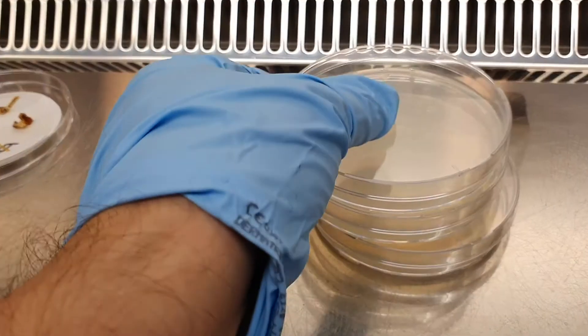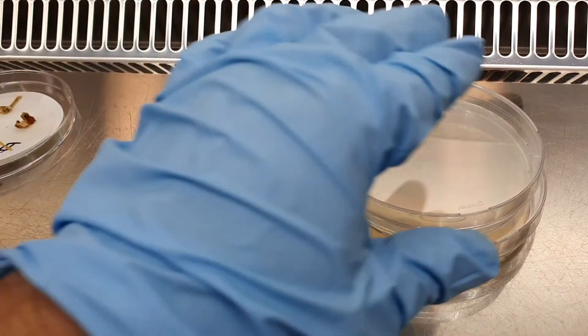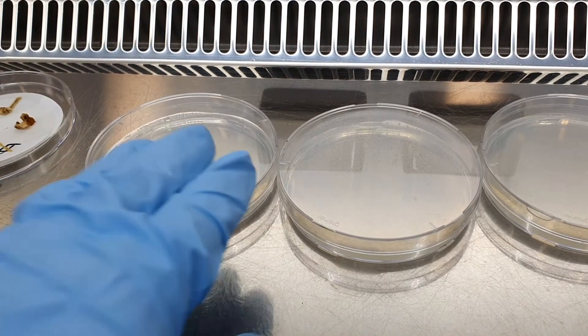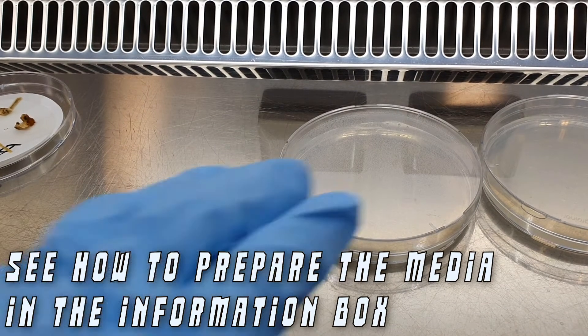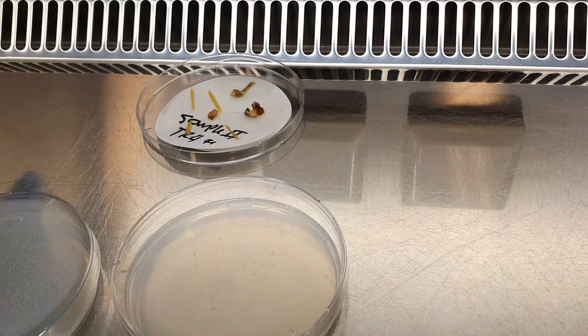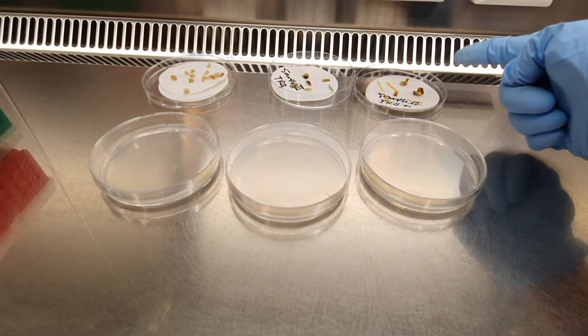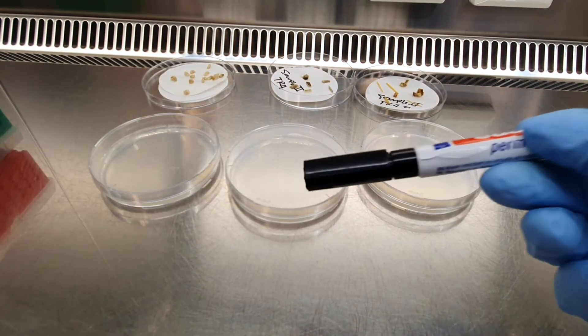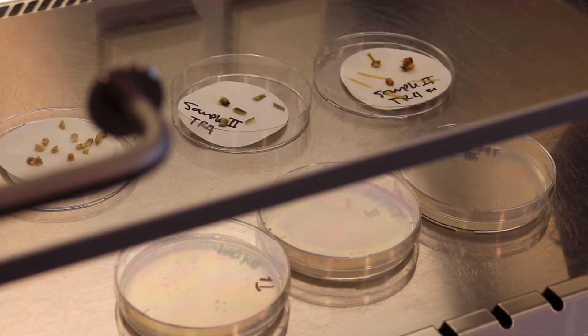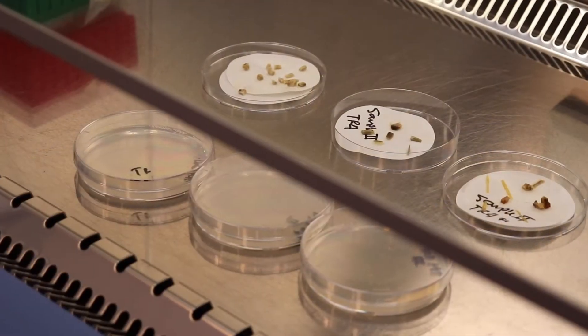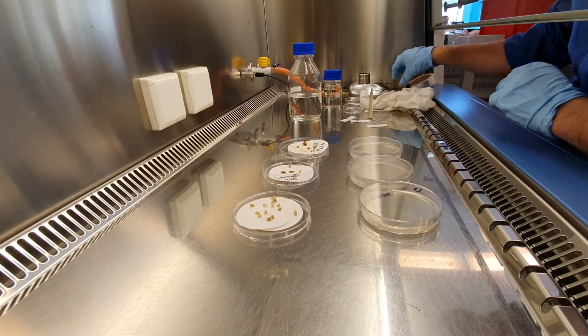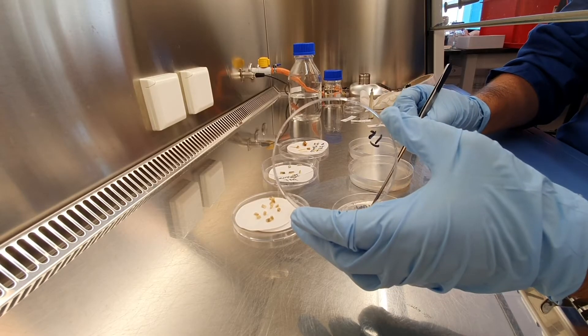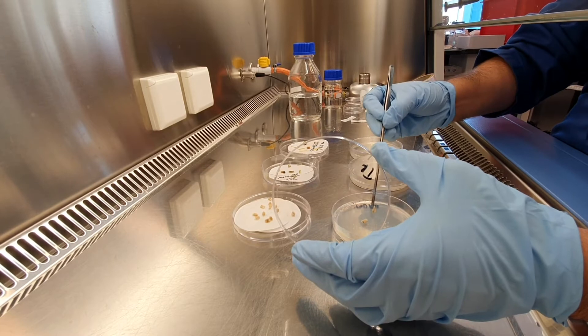Now, when the samples are ready and are dry, it's time to transfer them to media. I'm using here PDA with streptomycin. The information on how to prepare the media, you can find it in the information box. Also, sometimes I use Comada media for more difficult samples, like for example soil. What we are going to do is just transfer those pieces there. Don't forget labels. If you don't have labels, use a marker. This is very important. Now, with clean tools, we are going to transfer those little samples to the media. You can put as much as you want, but I recommend to put no more than five or six pieces per plate.